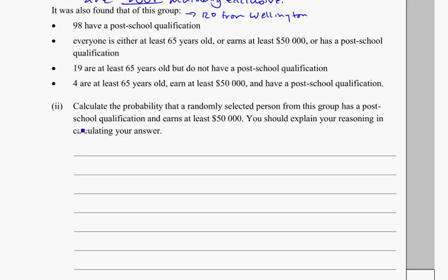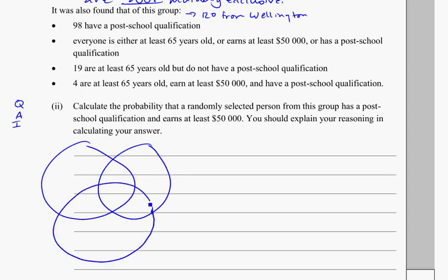It's going to have three bits of information because now I've got my qualifications, I have my age, and I have my income that I need to deal with. So let's see if I can draw something up here for us. And I might say this is the qualifications. We'll be specific about it. Has a post-school qualification. This is at least 65, and this circle down here can be at least 50,000.